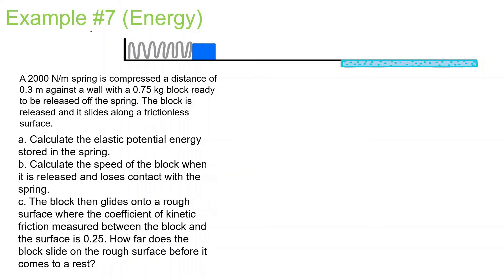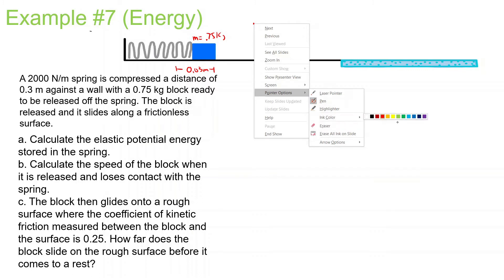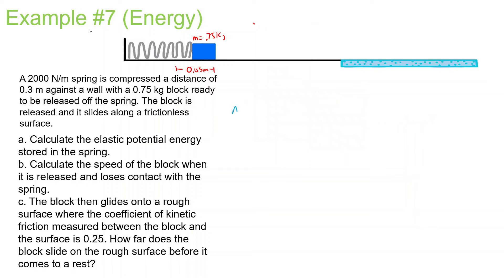A 2,000 N/m spring is compressed a distance of 0.3 meters against the wall with a 0.075 kg block, ready to be released. The block is released and slides along a frictionless surface. Calculate the elastic potential energy stored in the spring. EPE equals one half kx squared: one half times 2,000 times 0.3 squared. 0.3 squared times 2,000 times 0.5, and we get 90 joules.